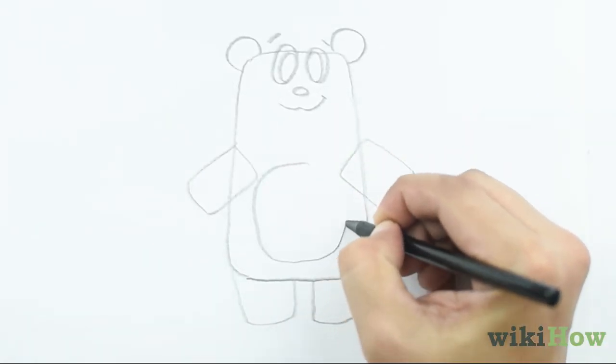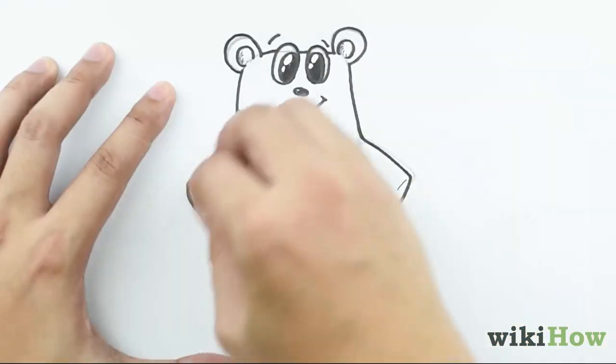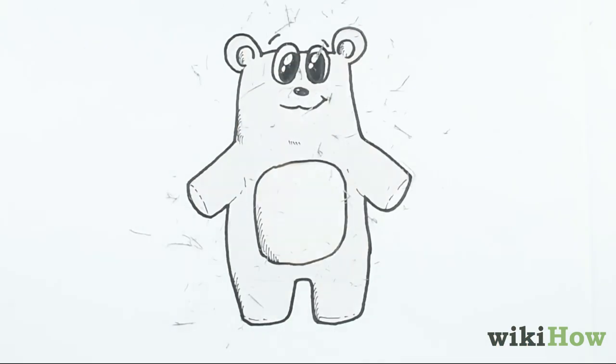Add another curved rectangle for the bear's belly, and small circular shapes inside of the bear's ears. Erase any unnecessary lines, and color in the drawing.